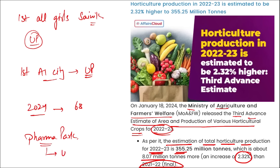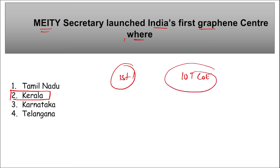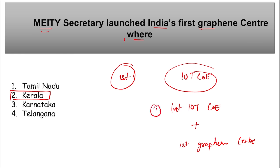MeitY has recently launched India's first graphene center. Where was it launched? India's first graphene center was launched in Kerala. Also remember: India's first IoT Center of Excellence — intelligent Internet of Things — was also launched. These two things, the intelligent IoT Center of Excellence and the first graphene center, were launched in the state of Kerala by MeitY, that is the Ministry of Electronics and Information Technology.